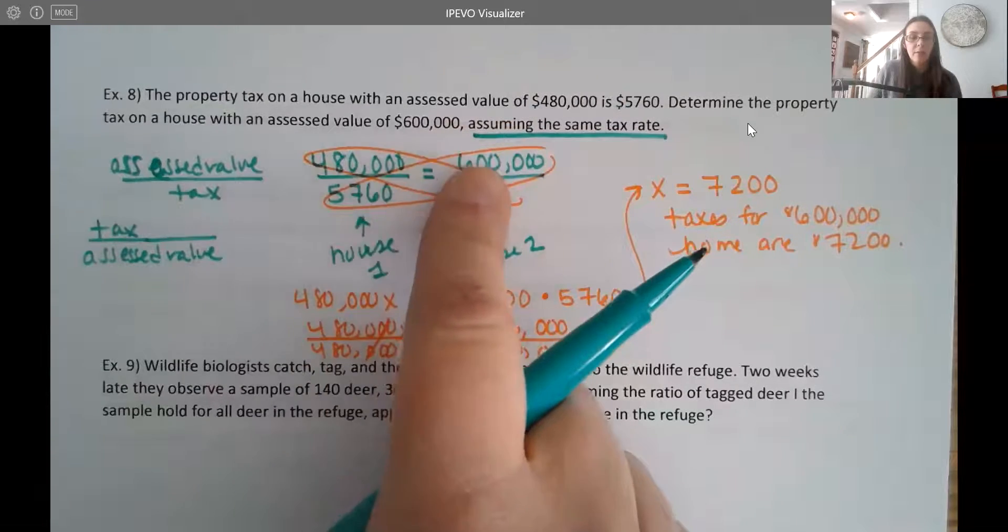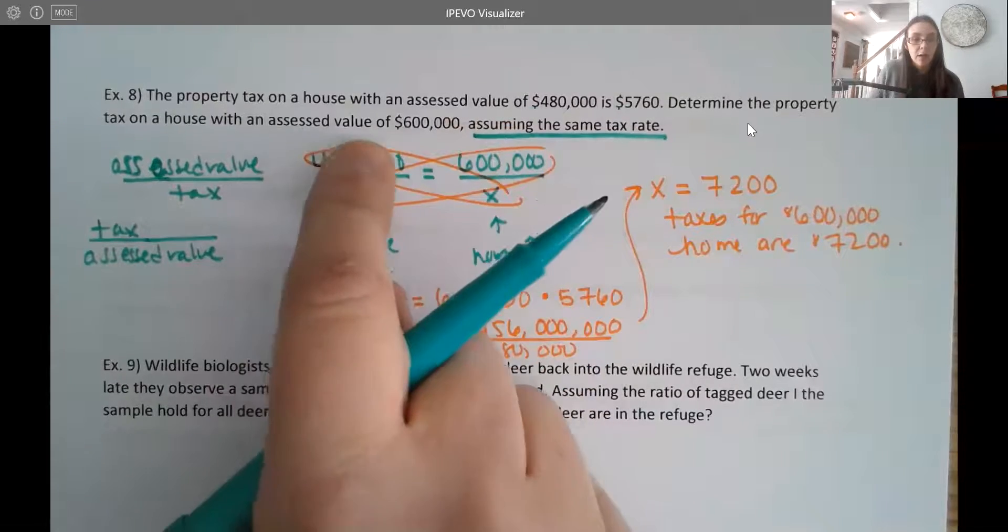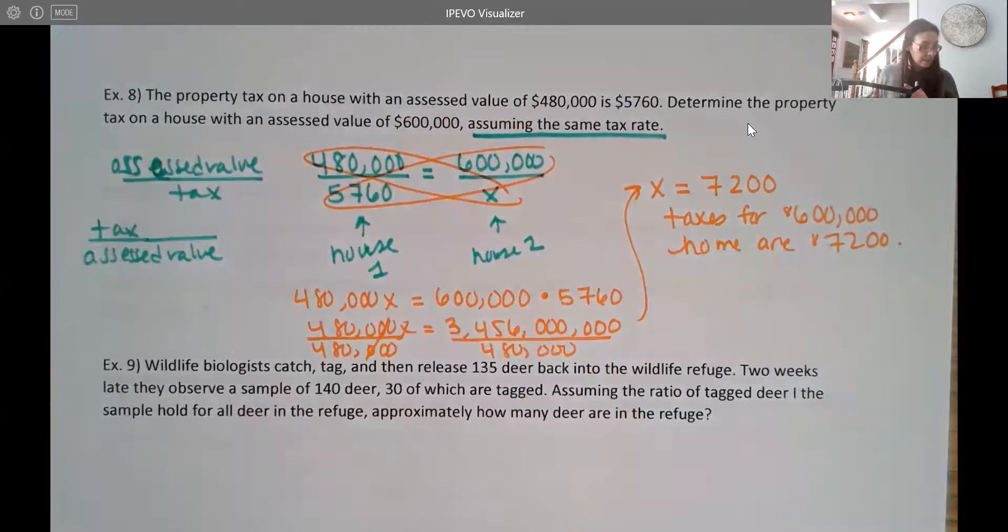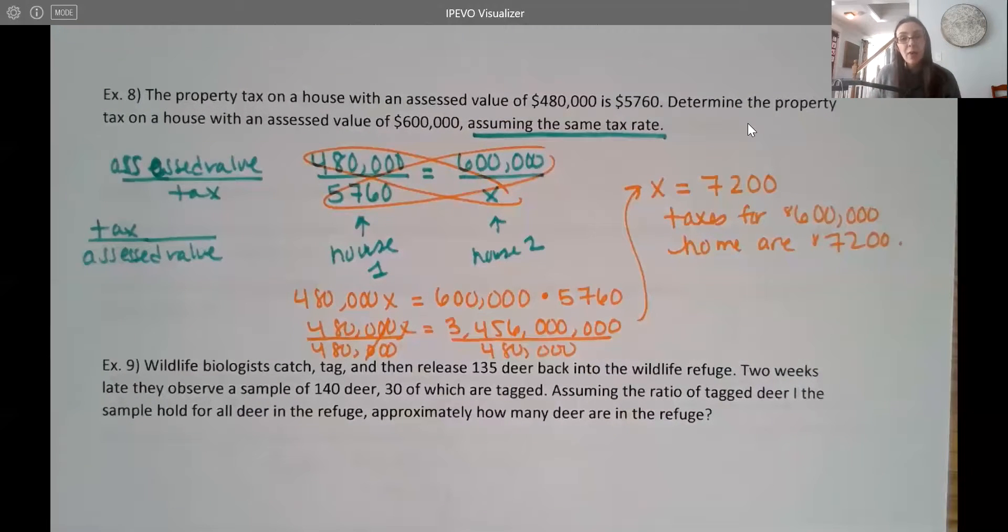So just that all of these values will be flipped. So you'd have the 5,000 on top here instead, and the X on top here instead. That's okay, as long as you're consistent.